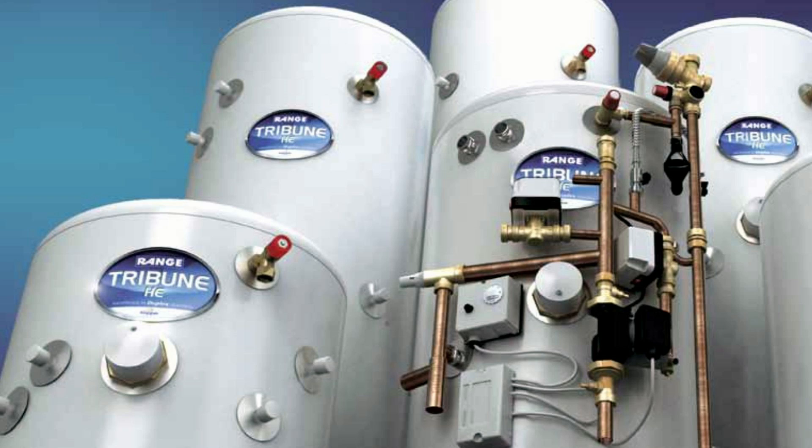So the rest of the system is pretty much exactly the same as a standard Y plan, and all we're really changing is the connection to the cylinder thermostat. So rather than it just going via the thermostat and returning to the wiring centre, it goes to the thermostat, into the high limit thermostat, usually in the same container, and then the output of that goes to the two port valve, and then the switched output from the valve is what returns to the wiring centre.